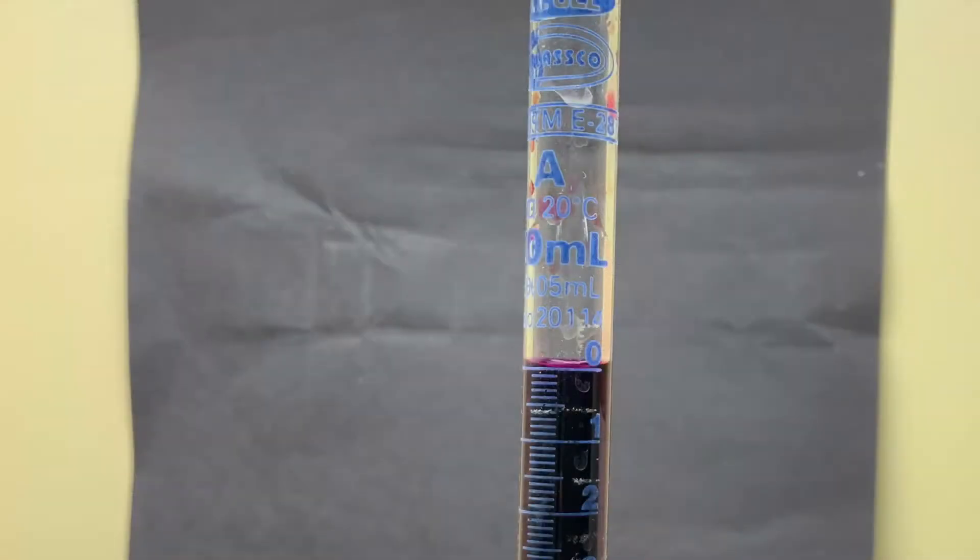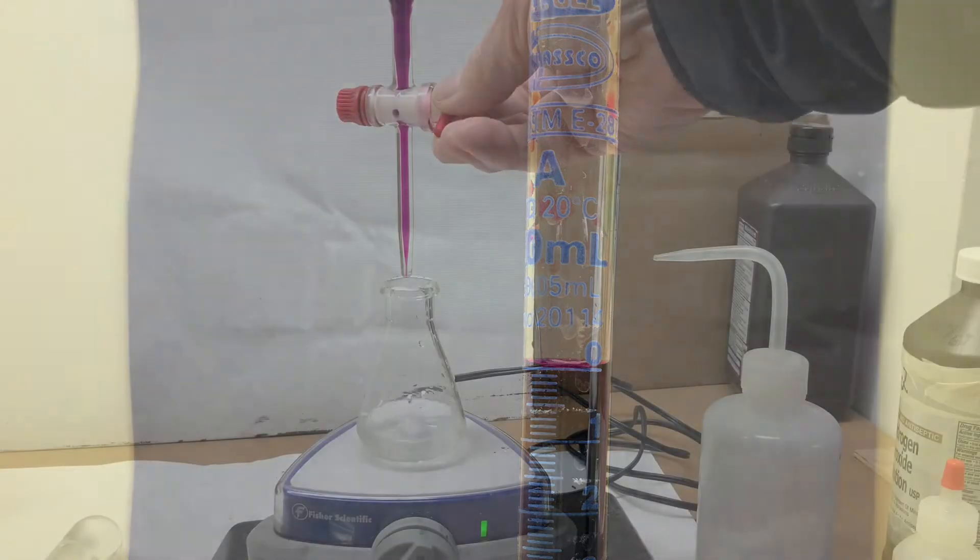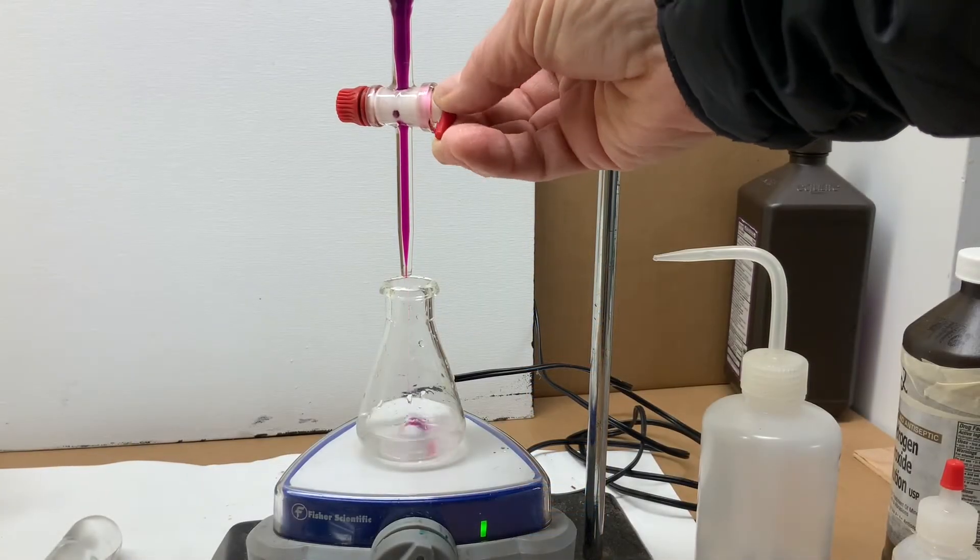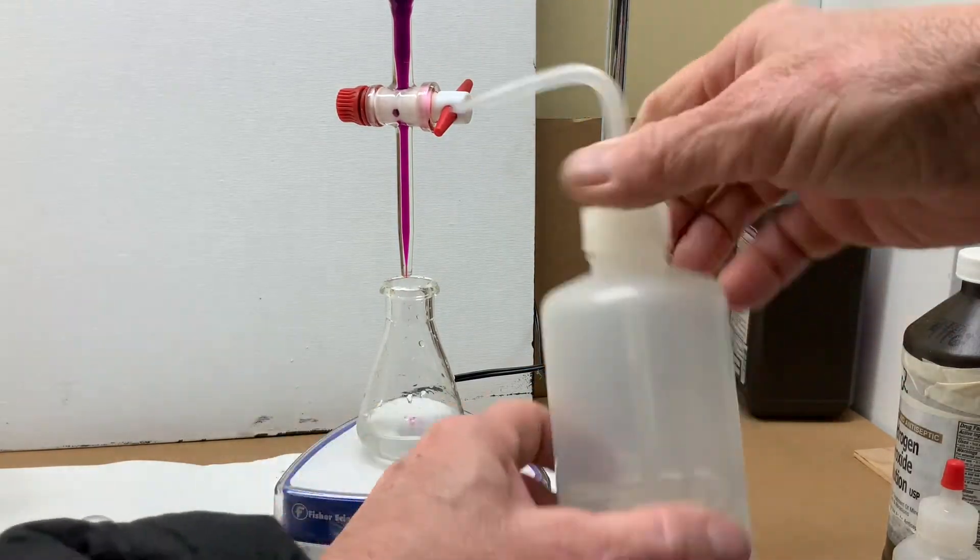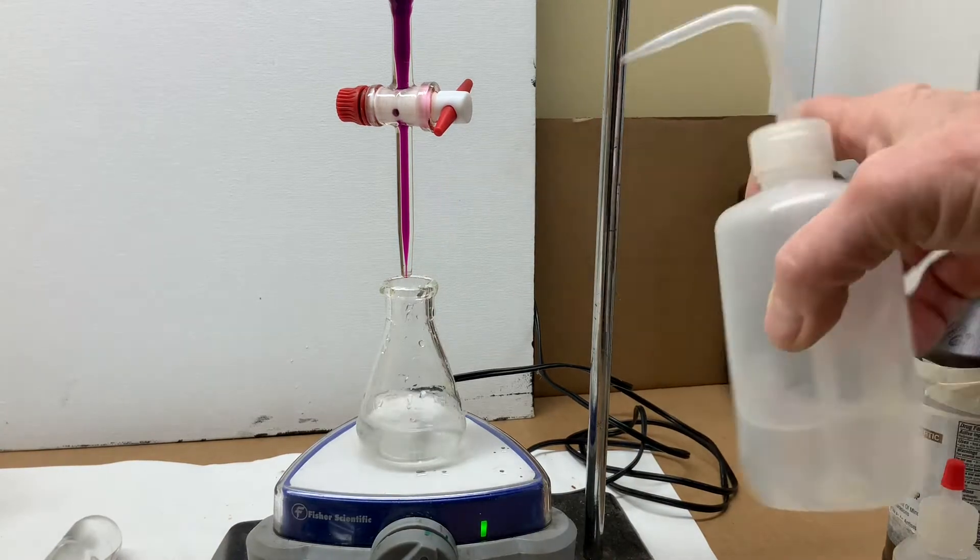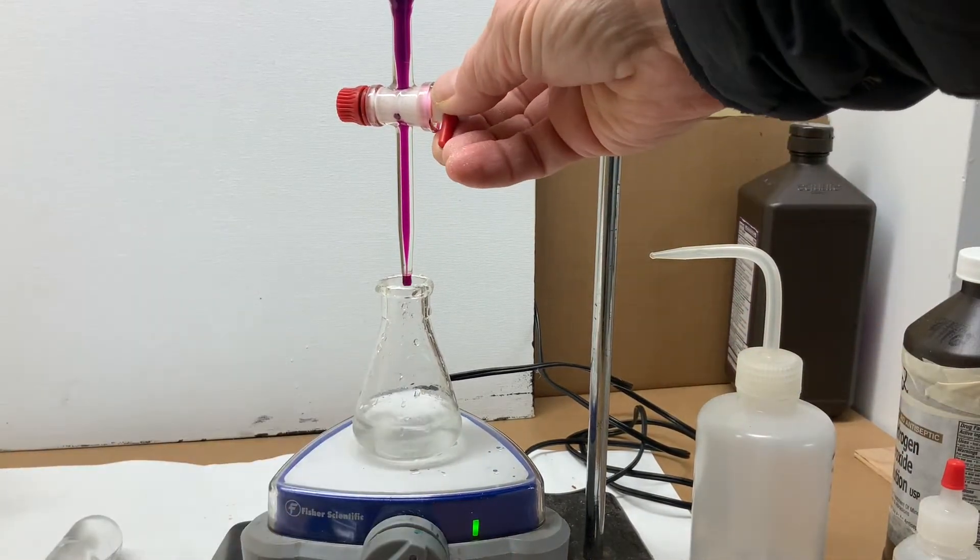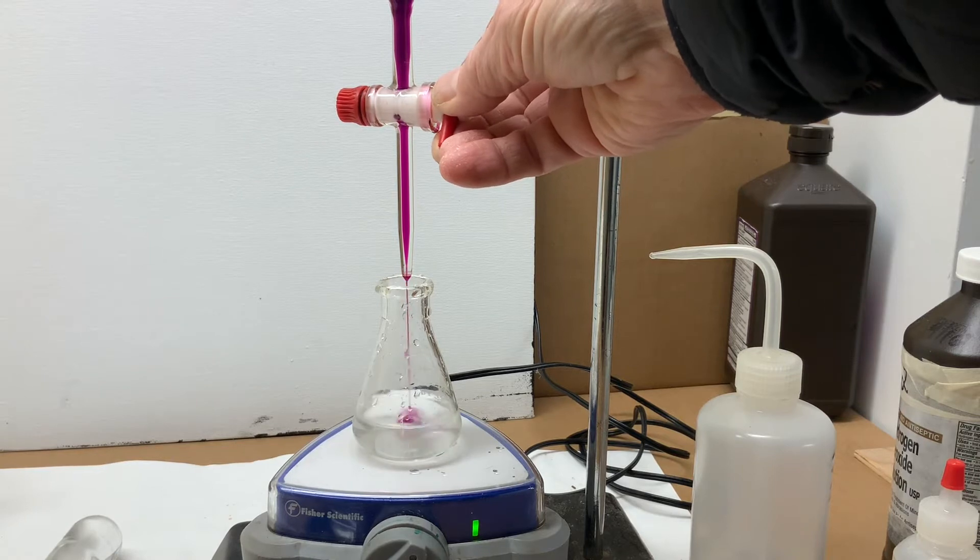Take an initial reading of the burette, then add the potassium permanganate into the dissolved iron sulfate until the pink color persists.